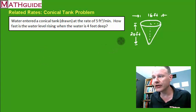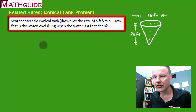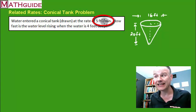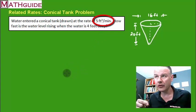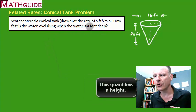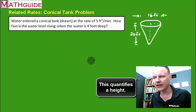The first thing we need to do is examine the word problem. If we have water entering this tank and it's entering at five cubic feet per minute, how fast is the water rising when the level is four feet deep? This five feet cubed per minute is a volume over time, so it's really a rate - it's how fast the volume is changing.